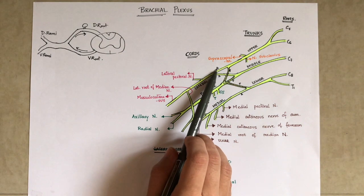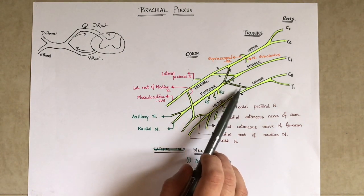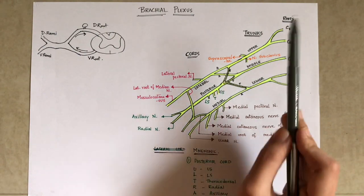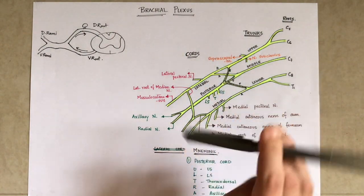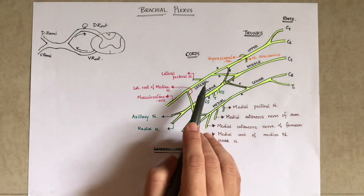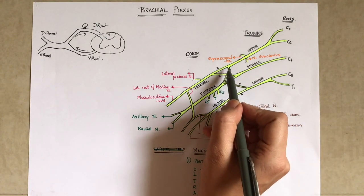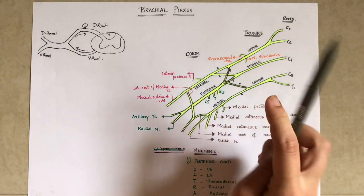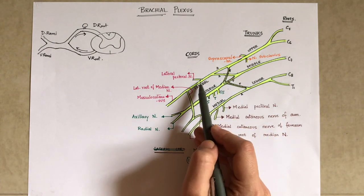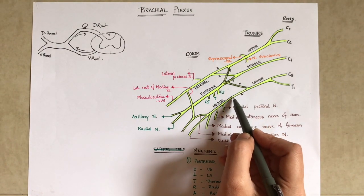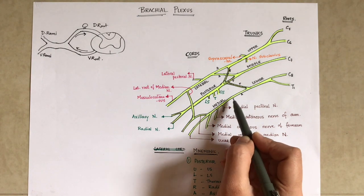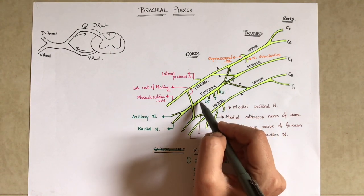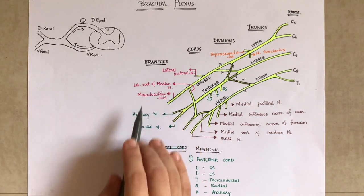Each of the trunks will divide into anterior and posterior branches — these are called divisions: anterior and posterior divisions. The posterior divisions are darkened to avoid confusion. The anterior division of the upper and the middle trunks joins to form the lateral cord. The anterior division of the lower trunk continues as the medial cord. The posterior divisions of all three trunks together will form the posterior cord.